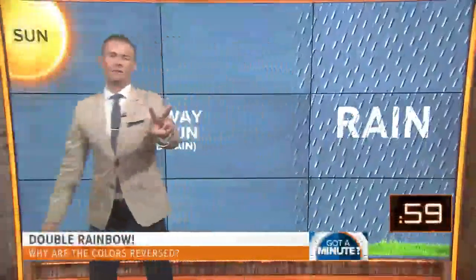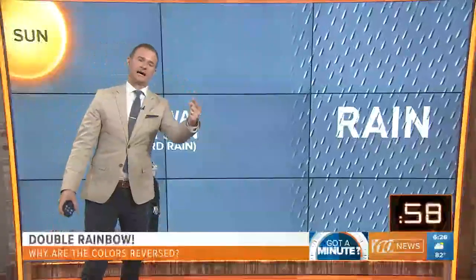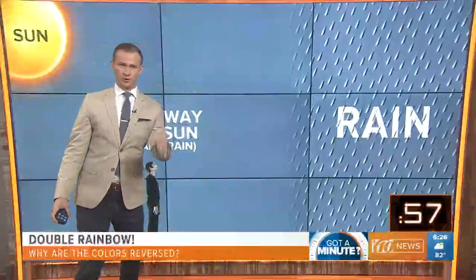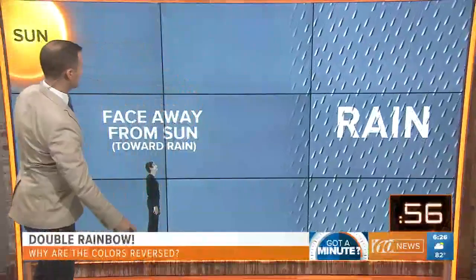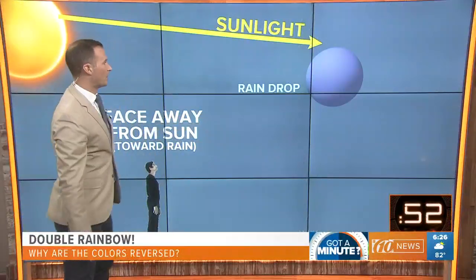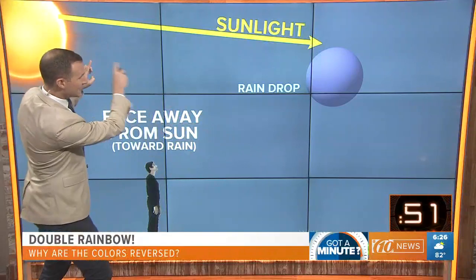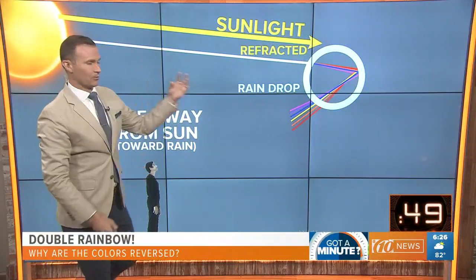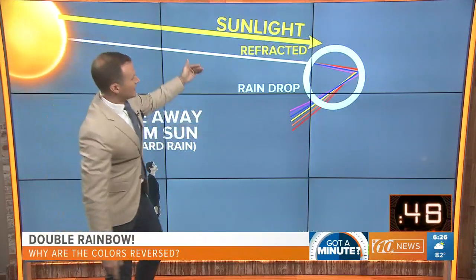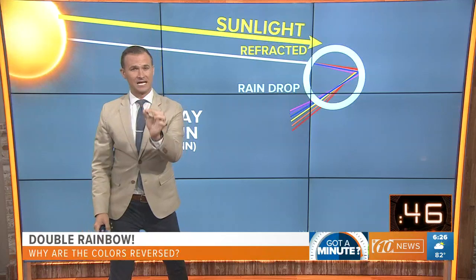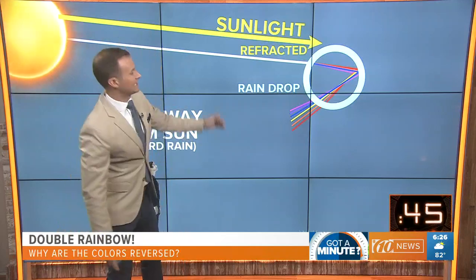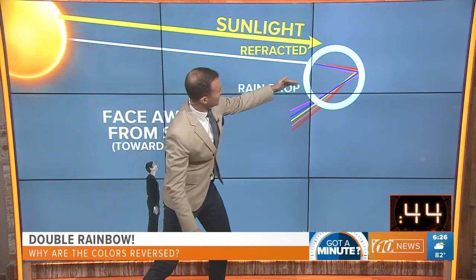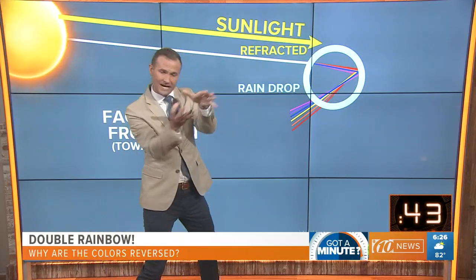So to explain a double rainbow, we've got to explain how rainbows form in the first place. In order to see one, put your back to the sun and face the rain — that's where you're going to find that rainbow. When the sunlight travels into a raindrop, that sunlight comes in as white light. Think about a prism here. As it moves into the raindrop, it's refracted.